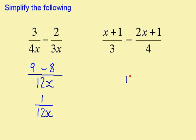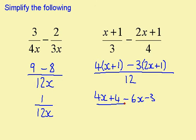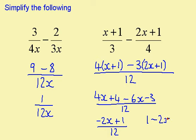Here, my common denominator is going to be 12. 3 goes into 12 four times, so I need to multiply this by 4. I have 4 times (x plus 1). 4 goes into 12 three times, so I have to multiply this by 3. So I have 3 times (2x plus 1), and it says subtraction. Now I need to multiply out these brackets: so I have 4x plus 4 minus 6x minus 3, all over 12. Now simplifying: 4x minus 6x is minus 2x, plus 4 minus 3 is plus 1, and this is over 12. A nicer way of writing it is 1 minus 2x over 12.